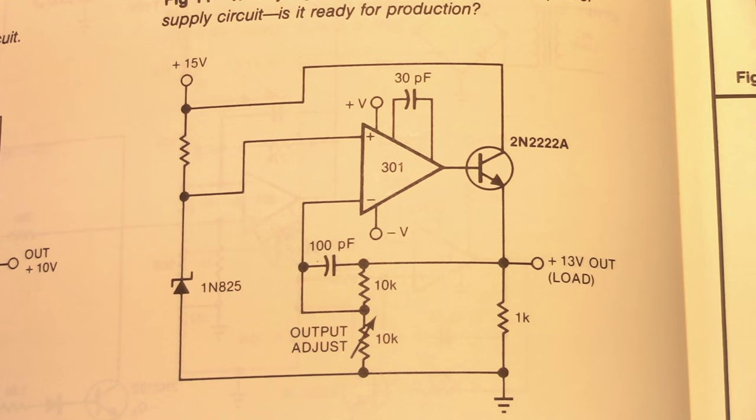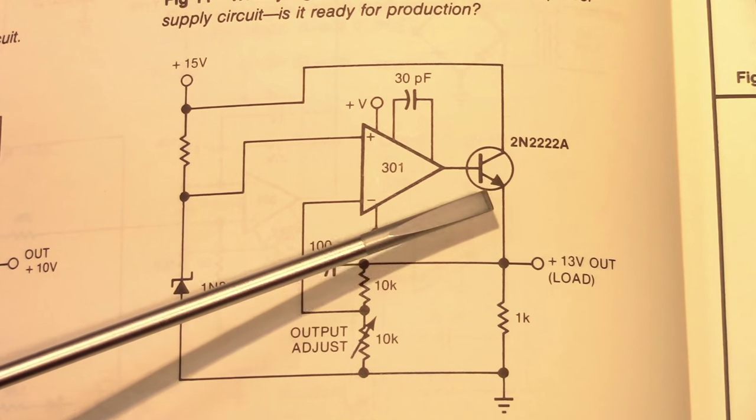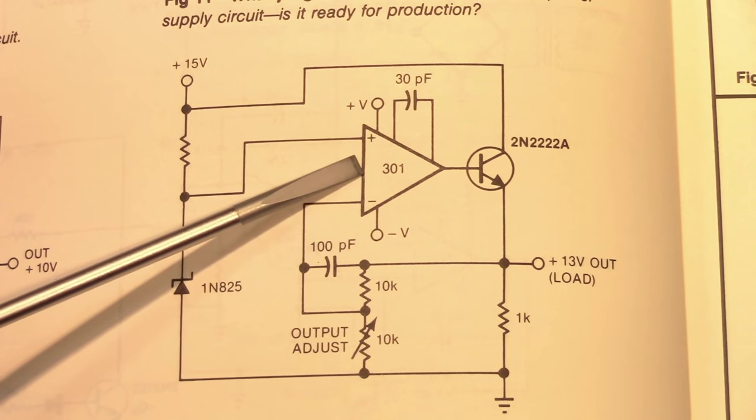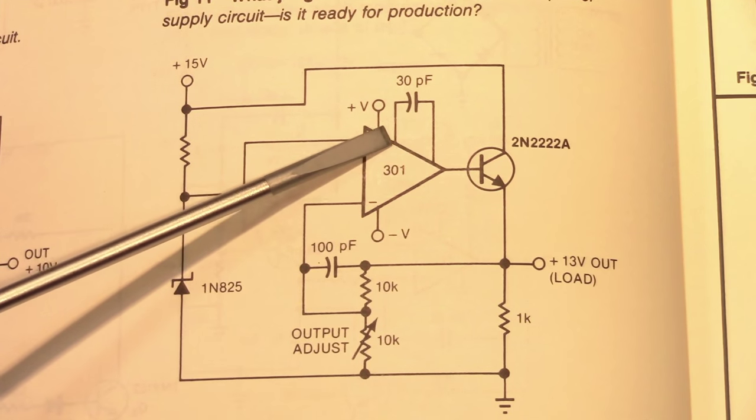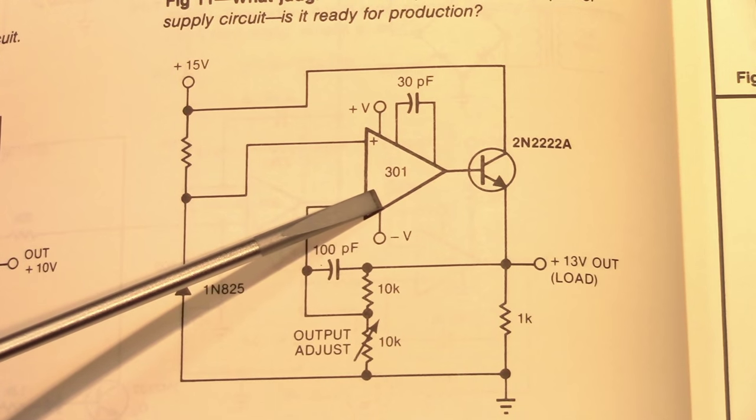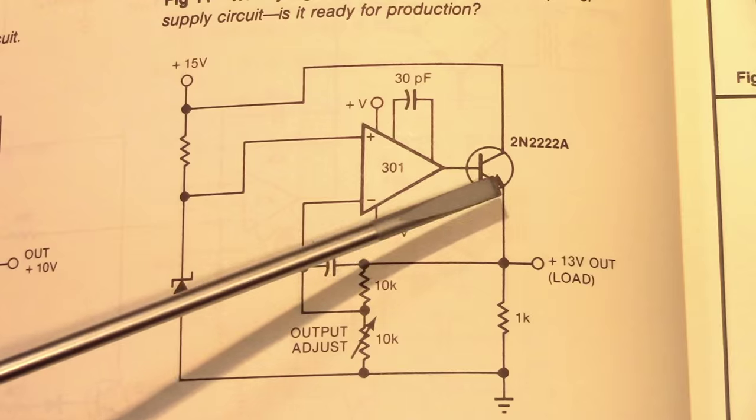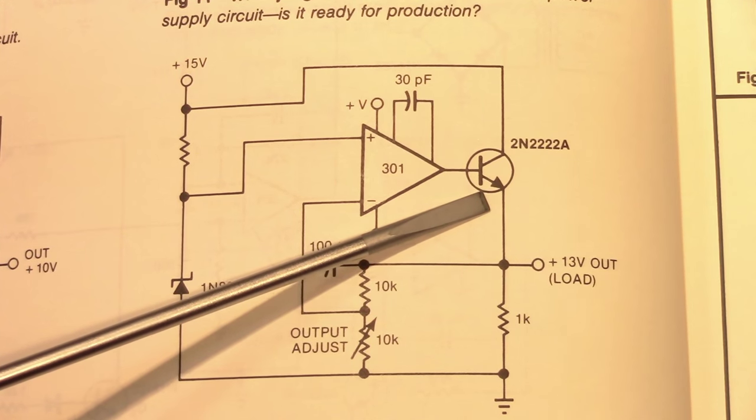Now I strongly suspect that this emitter follower is what's causing the oscillations for a couple of reasons. First, the LM301 data sheet specifies a 30-puff compensation capacitor should be used to prevent unwanted oscillations, and that's exactly what's being used in this circuit. Secondly, emitter followers are notorious for being prone to breaking into oscillation.